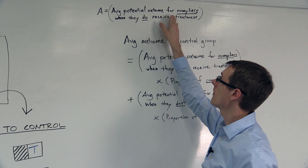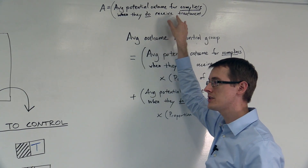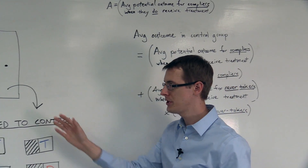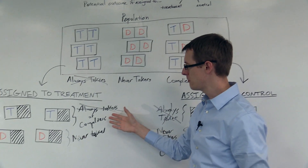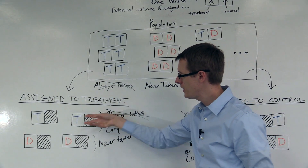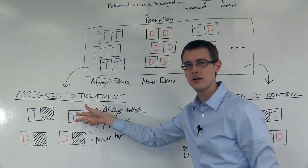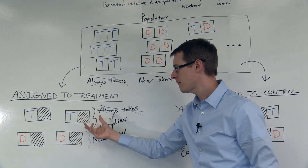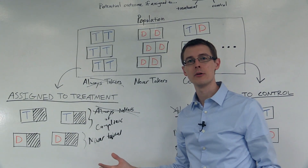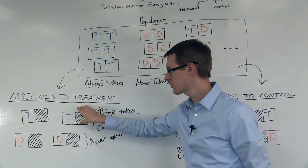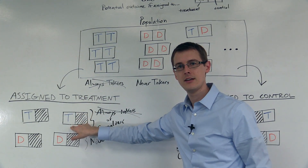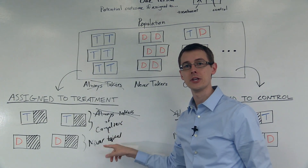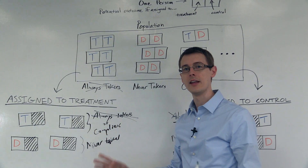This first number — the average potential outcome for compliers when they do receive treatment — we learn directly from the data. We go over here to our treatment group, and because there are no always-takers, we know these people are compliers and they receive treatment. So we look at the average outcome — say, in the Oregon Healthcare experiment, the average cholesterol for people in the treatment group who got treated. That tells us the average potential outcome for compliers when they get treated.